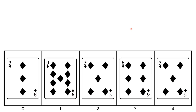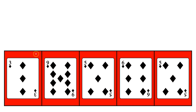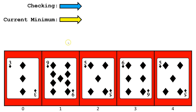Let's look at this unsorted array. The algorithm is going to treat the entire list as an unsorted portion. As we sort portions of it, the background will turn green. The algorithm keeps track of the current minimum value in the unsorted portion of the list and also keeps track of what index it is currently checking. We set the minimum at the beginning of the unsorted portion of the list to start.